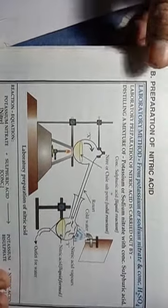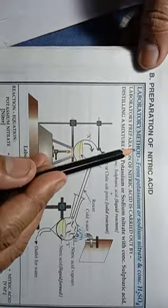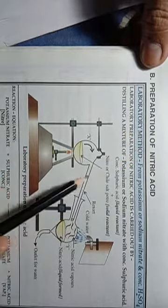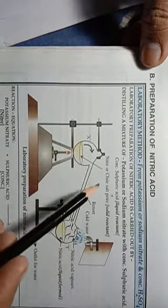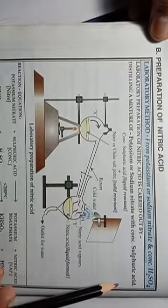Now the preparation of nitric acid by the laboratory method. From this point the content is included in your syllabus. The laboratory method uses potassium nitrate or sodium nitrate with concentrated sulfuric acid.